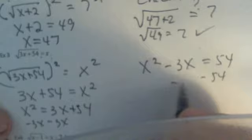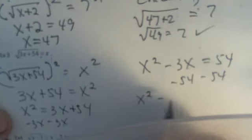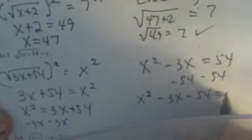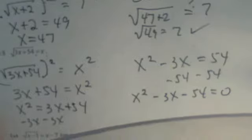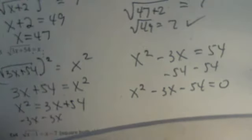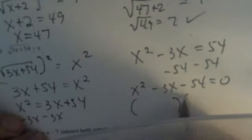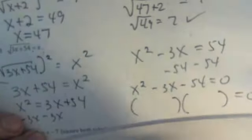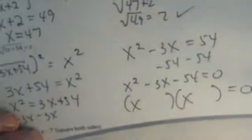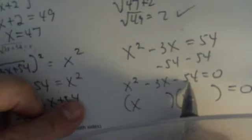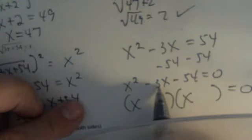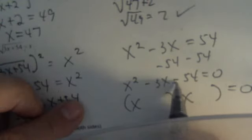Subtract the 54. Leaves me x squared minus 3x minus 54 is 0. So now I need to factor so I can solve this. So I'm looking for, in this case, since I do have a 1x squared, factors of negative 54 that subtract to give you 3. And the reason being is, again, because that is negative. And so that tells me my signs are different here.